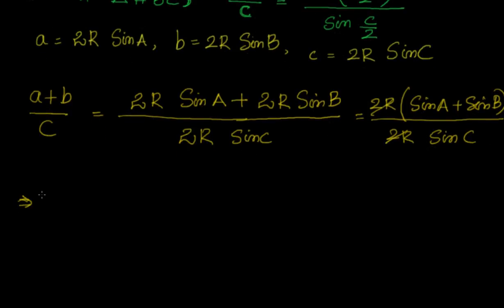We know that sin C plus sin D form, and the transformation from sum to product for that is 2 sin((C+D)/2) times cos((C-D)/2). That is 2 sin((A+B)/2) cos((A-B)/2) divided by